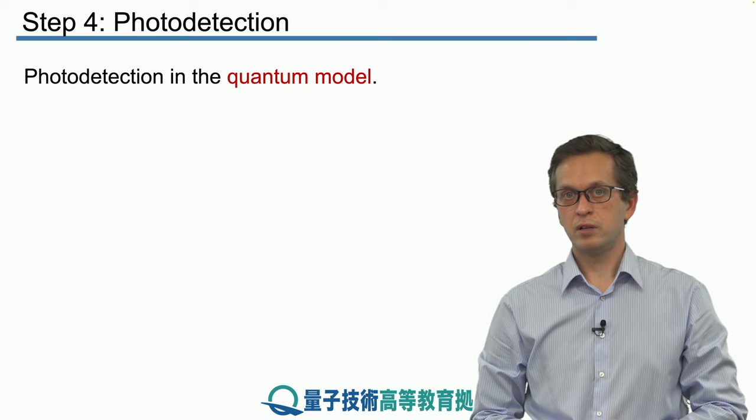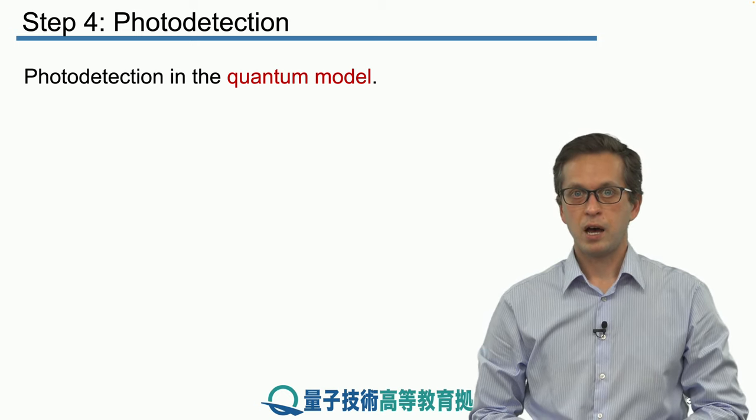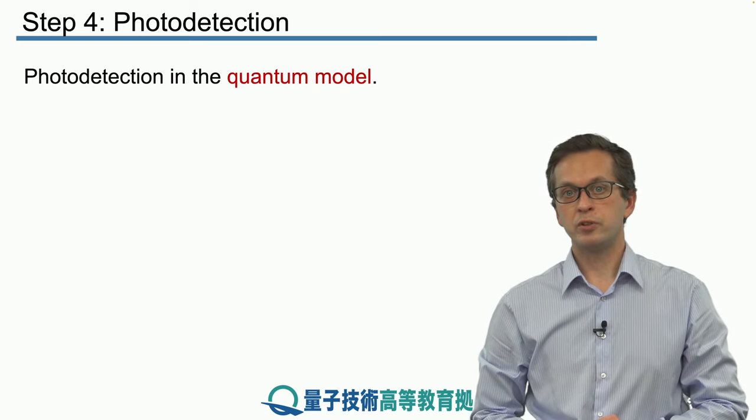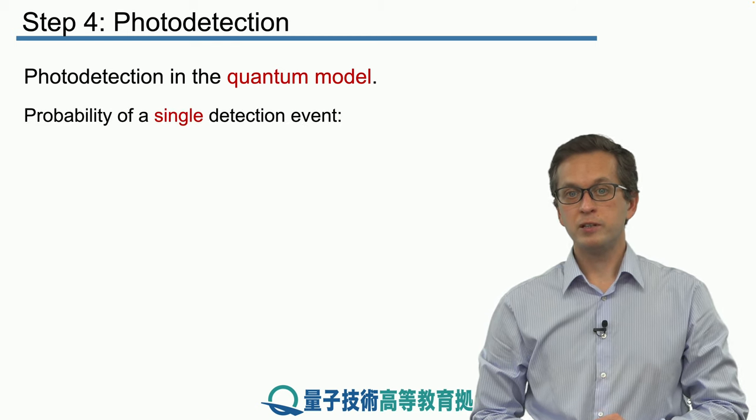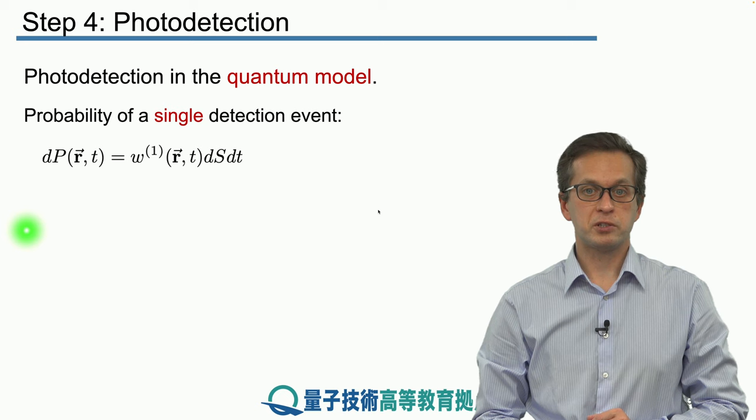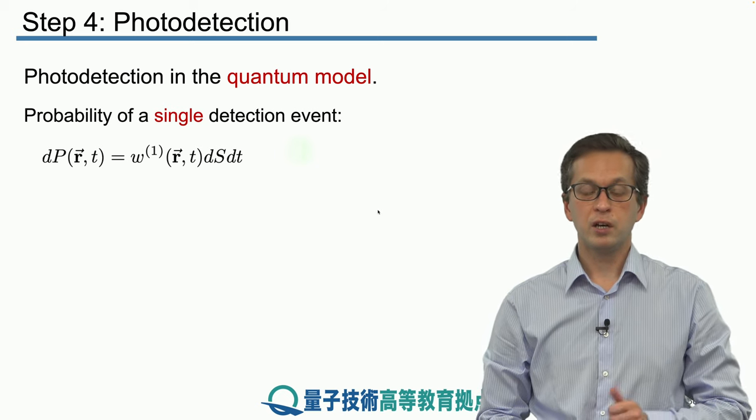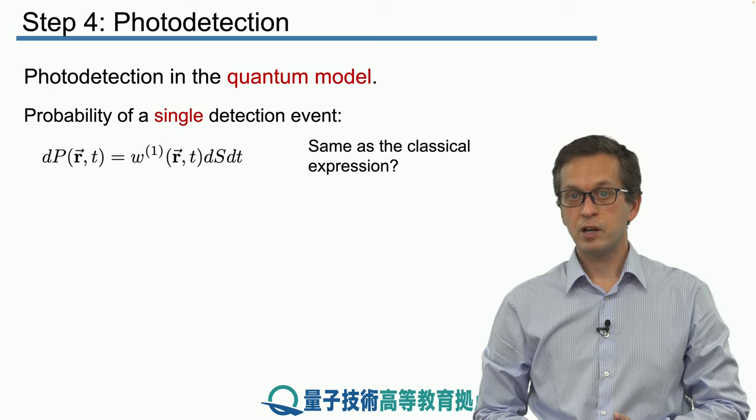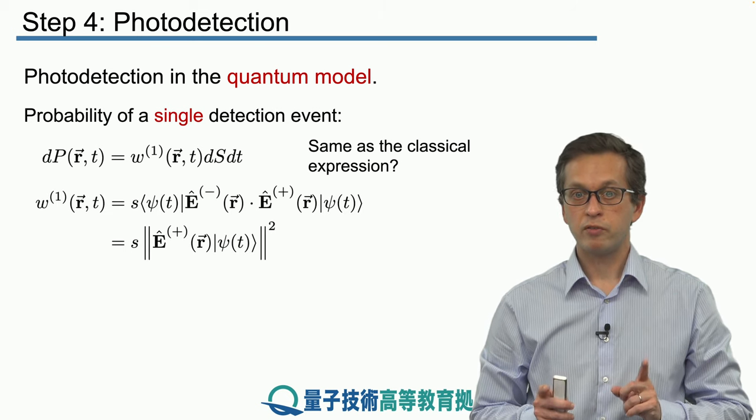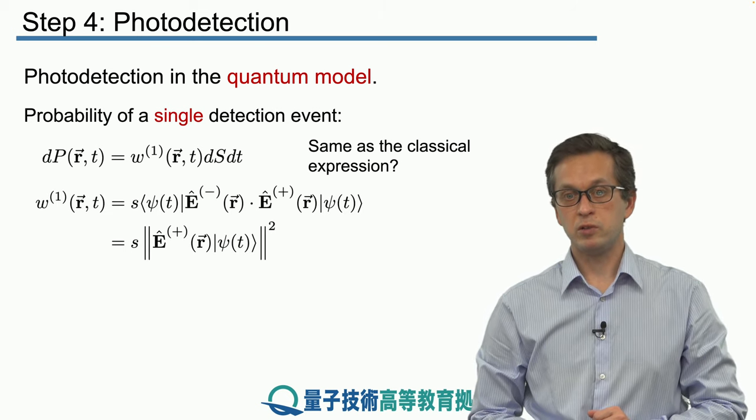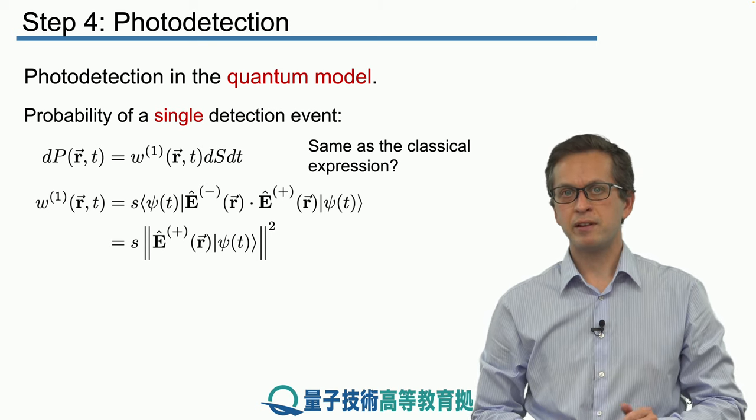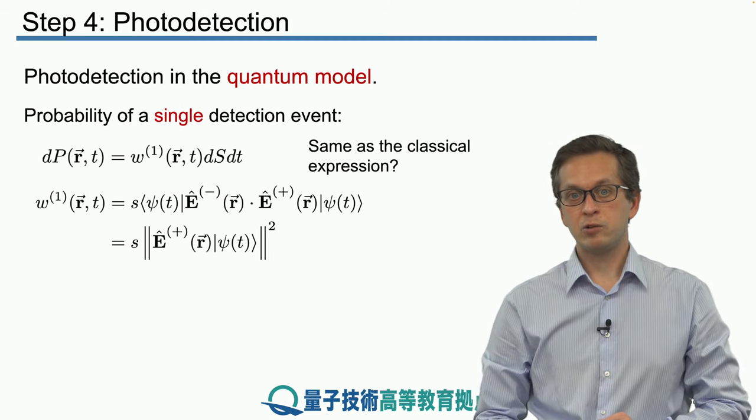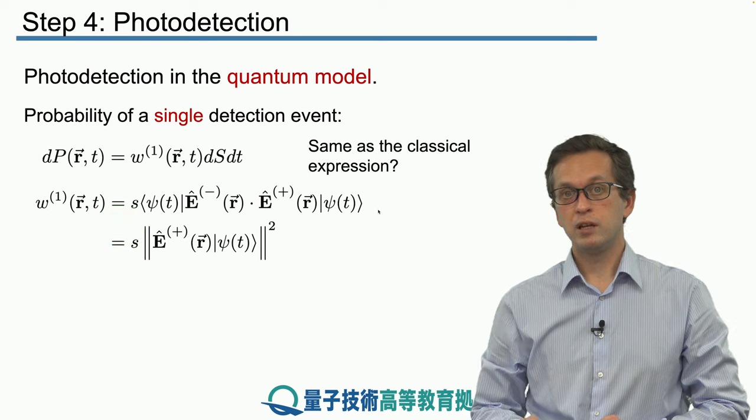Now, this is the semi-classical model. What's the quantum model for photo detection? How do we use what we have just set for classical electrodynamics, and use it in quantum description of the light? So the probability of a single detection event is given by the following expression, which is exactly the same thing that we wrote down on the previous couple of slides for semi-classical model. Does it mean that w^(1) is also the same? No. Now our fields are operators, and this is how you compute w^(1). Deriving this expression is a very lengthy process, therefore I just ask you to accept it, and we will get a lot of practice in calculating these rates w^(1) and w^(2) in future steps and lessons.